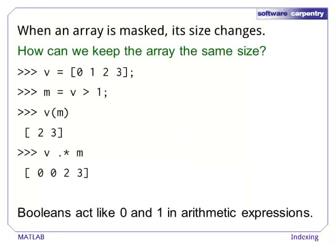Sometimes, we want to replace values in a matrix with zeros without changing the size of the result. We can use the Boolean mask in elementwise multiplication to replace locations that are less than 1 with zeros.